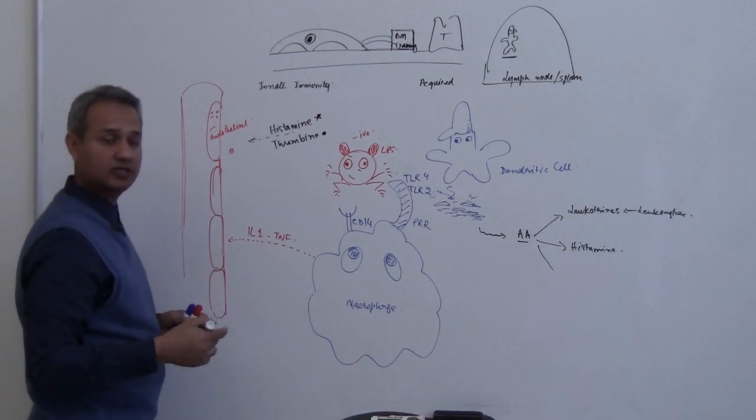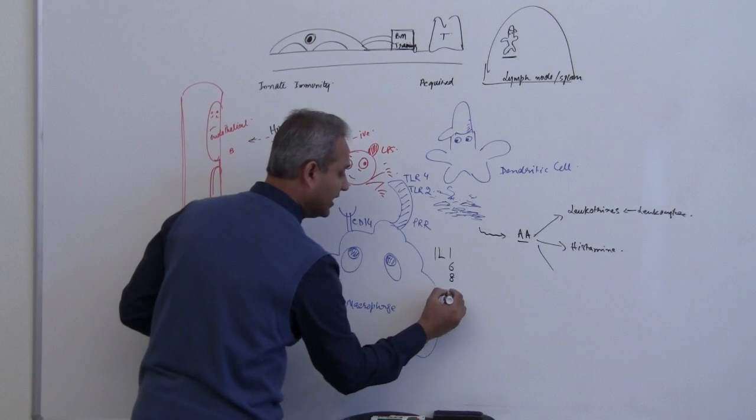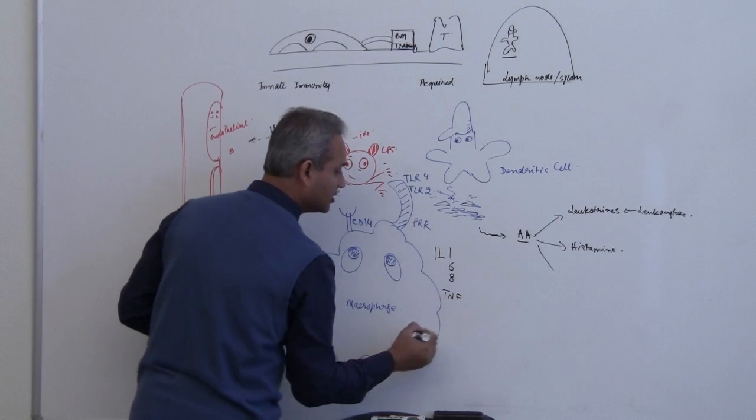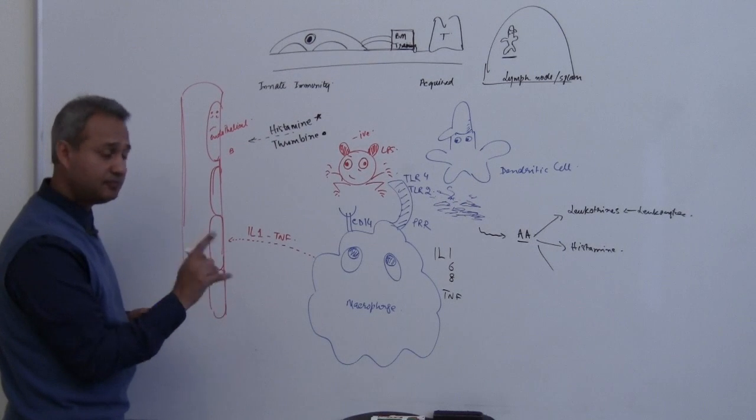Then macrophage has released interleukin. So remember, macrophage releases interleukin 1, 6, 8, tumor necrosis factor, and so on. So that tumor necrosis factor is here, interleukin 1 is here.